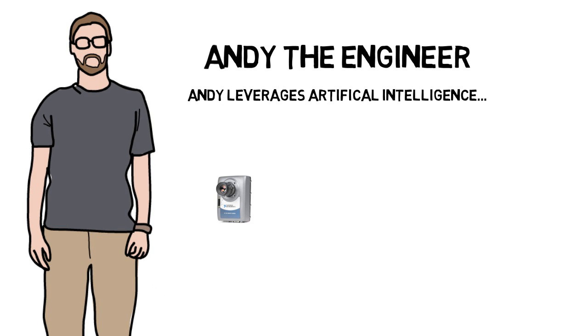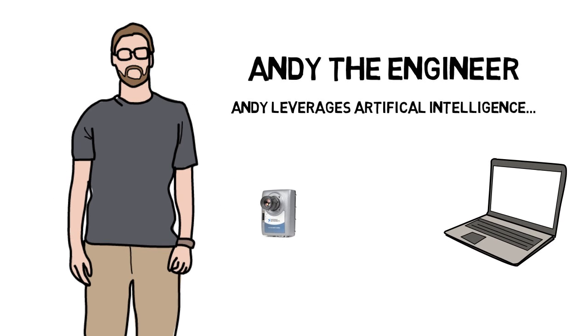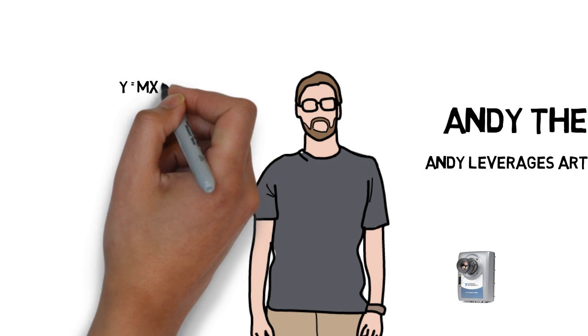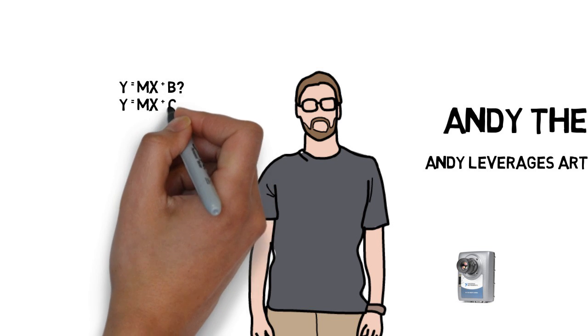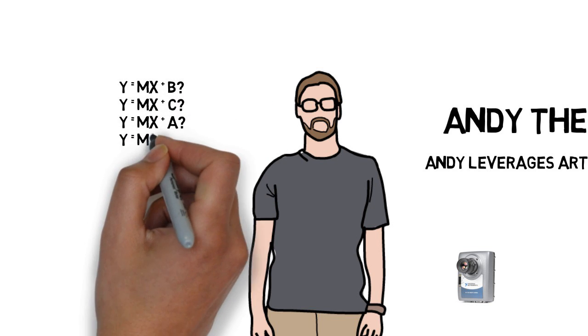Take machine vision for example. Traditionally, Andy would load images into the computer and then methodically try different measurement tools to manually determine how to classify parts, such as good or bad.